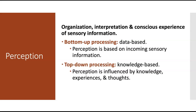Our brain doesn't always give us the option to correct its interpretation. Our brain will jump to conclusions, and as much as that can be a really useful shortcut, it can also mean that we make mistakes. We'll be looking at some of the ways that can happen and the different factors that influence it.